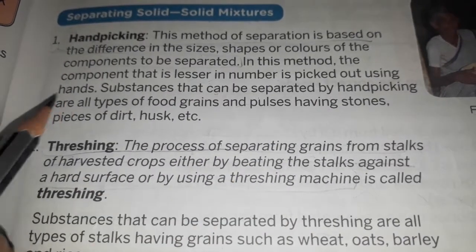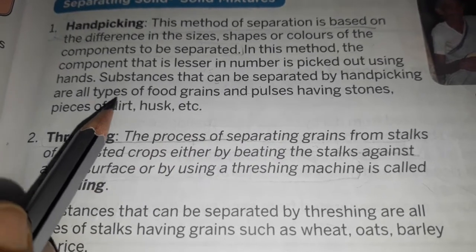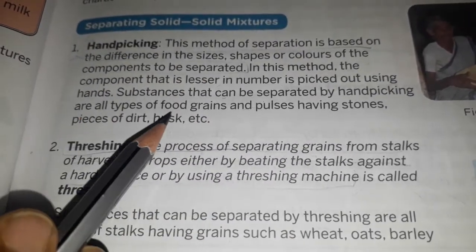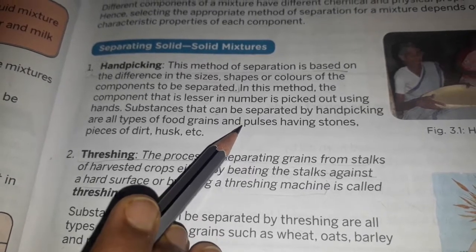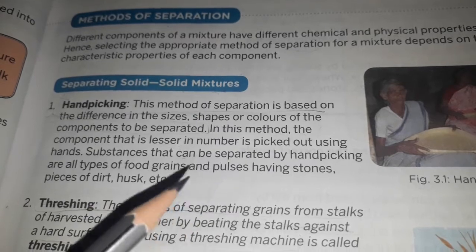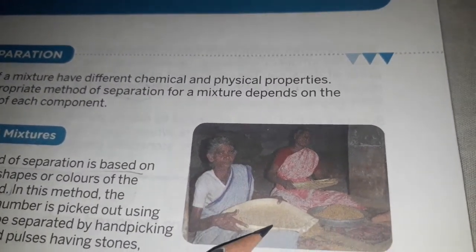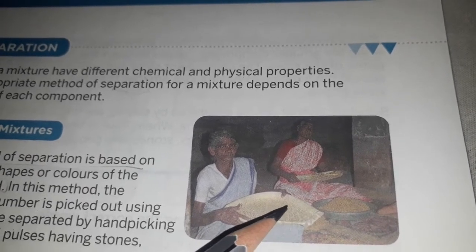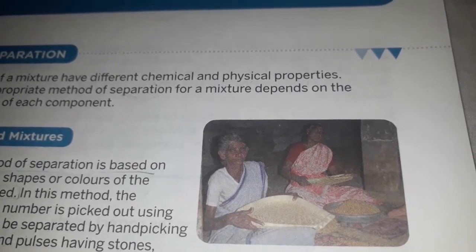Substances that can be separated by hand-picking are all types of food grains and pulses having stones, pieces of dirt, husk, etc. Food grains include rice and wheat, and pulses include gram, mung, dal. You can see two ladies in this picture who have taken a soup — what we call a soup or rice grains — and they are picking out small impurities like small stones and pieces of dirt through the hand-picking process.